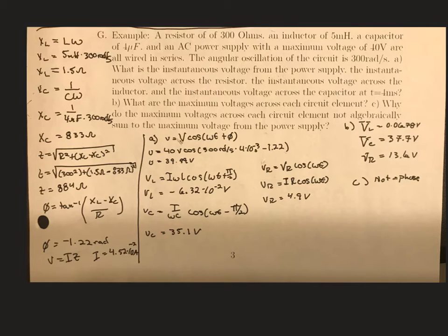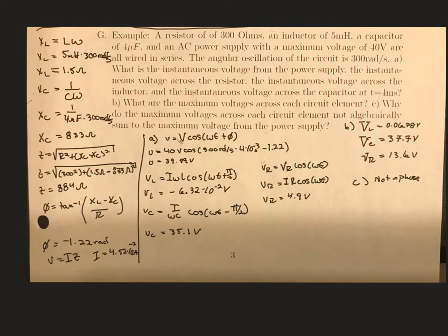To find the instantaneous voltage across the inductor, we need to know the current. To find the current, I'm using the equivalent of Ohm's law: voltage equals current times impedance. I plugged in the resistance, the inductive reactance, and the capacitive reactance to calculate the impedance. Plugging that in gives a current of 4.52×10⁻² amps. Using that current, we get a very small voltage across the inductor, which makes sense because the inductive reactance is very small.